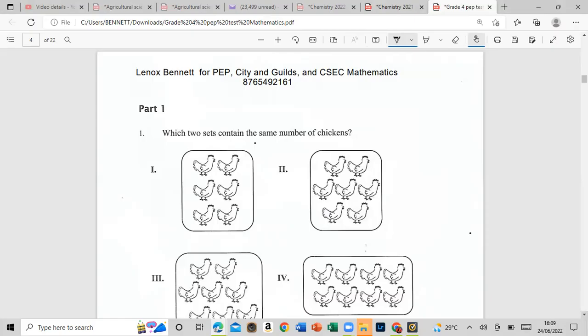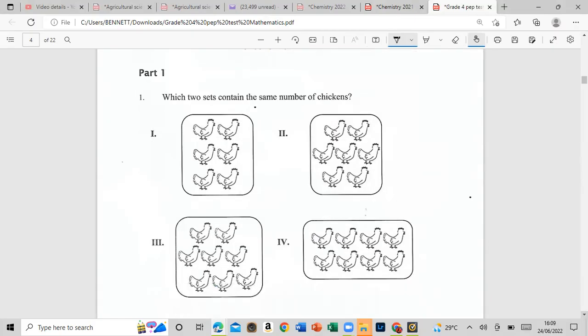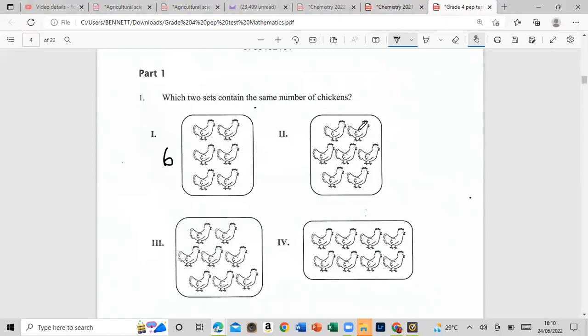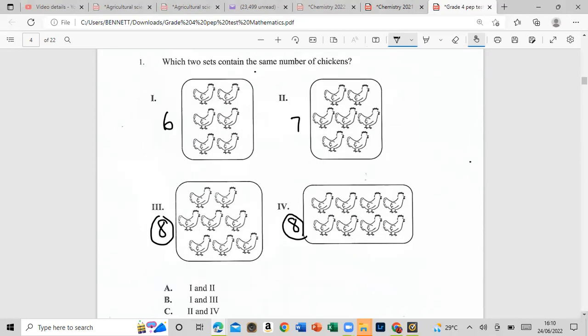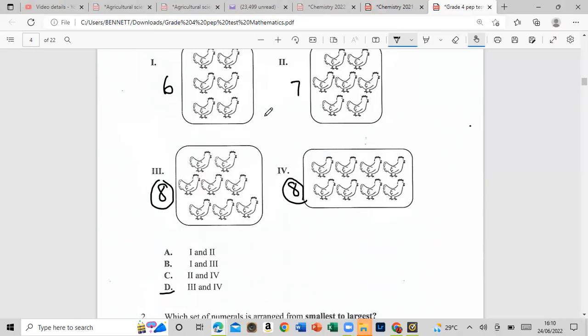The first one says which two sets contain the same number of chickens. Now what you're required to do is to count each box of chickens and find the one that matches. Don't estimate it, count them and see what you get. So this has six chickens, this has seven chickens, and three and four both have eight. They're the same, so our answer will be three and four.